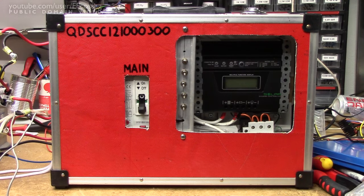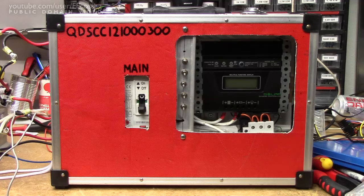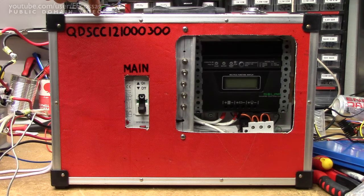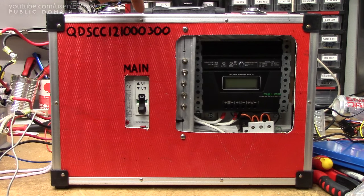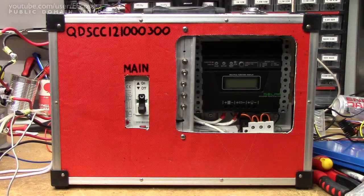That's my quickly deployable solar charge controller for 12 volt systems handling a maximum roughly 1,000 watt inverter and a maximum of a 300 watt solar panel or QDSCC 121,300 for short. So thank you for watching. Cheerio!